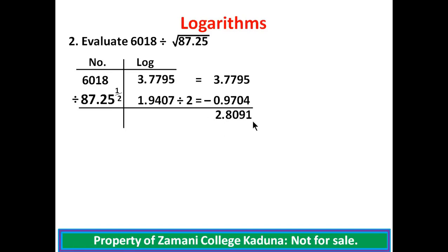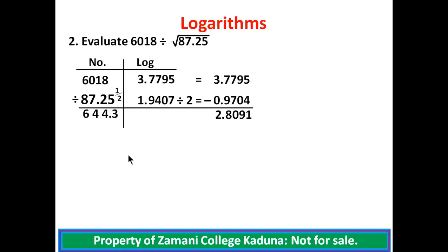We look for the antilog of 2.8091. We keep the integer part and go to the antilog tables. Check 80 under 9, differences of 1, giving 6443. Coming back to the integer part 2, we add 1 making 3. Count 3 digits and place the decimal point. We have succeeded in evaluating the problem — the answer is 644.3.